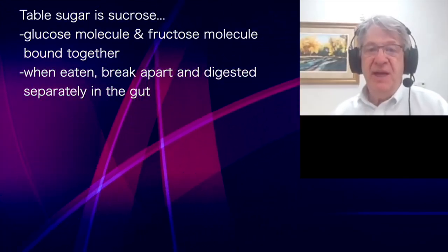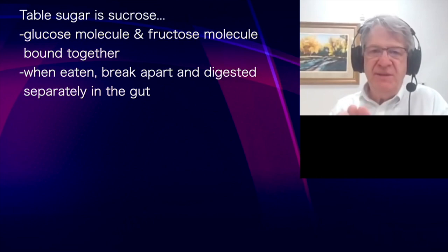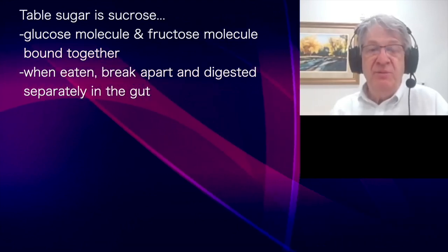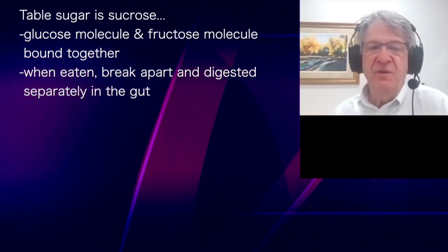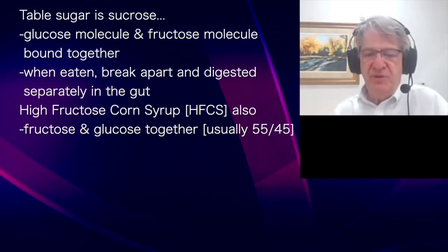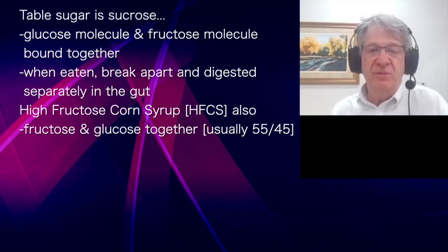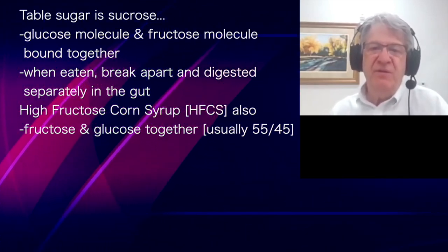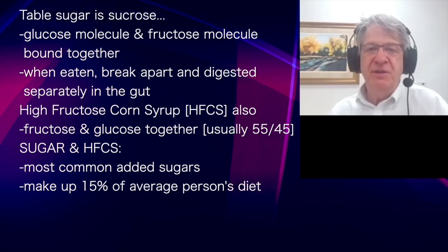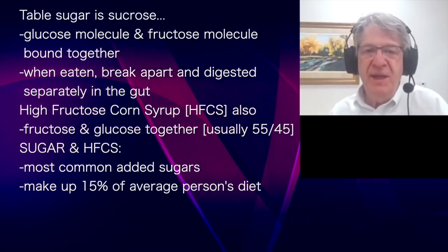Sucrose is a disaccharide consisting of a glucose molecule and a fructose molecule bound together. When you ingest sucrose, the two get broken apart and absorbed separately in the gut, so you get glucose and fructose together when you eat table sugar. High fructose corn syrup also consists of glucose and fructose mixed together — typically about 55% fructose and 45% glucose. These are the two major added sugars, and they can make up 15% of the overall caloric intake in the average person's diet.